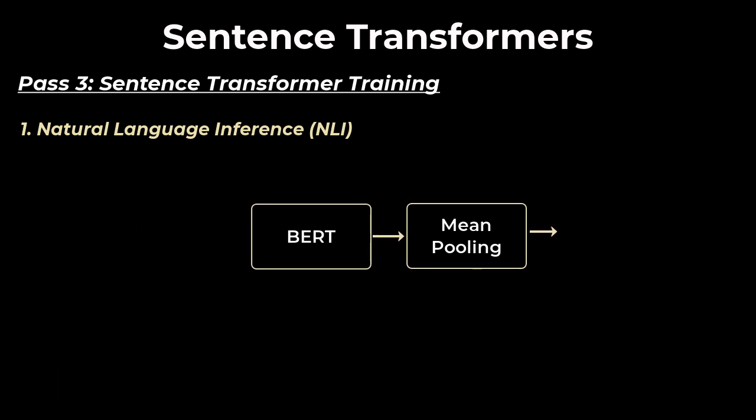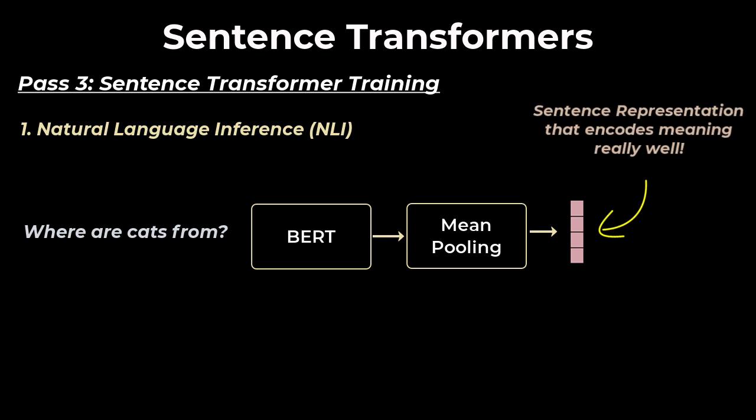During inference time, we only need the sentence transformer piece, where we get a question and then we get the corresponding sentence vector. This vector is the sentence representation that encodes the meaning very well.